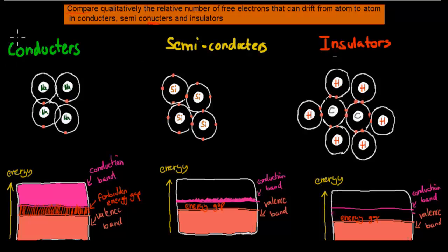Conductors are the ones which can conduct electricity quite well. That means they have most of their electrons in the conduction shell — so you're going to have conduction electrons.